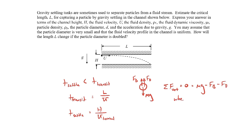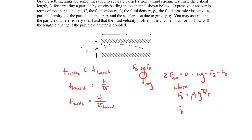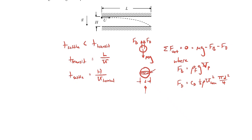The buoyant force is the weight of the displaced fluid — the density of the fluid times gravity times the volume of the particle. The drag force is a drag coefficient times the dynamic pressure based on terminal speed, times the projected area of the particle, which is πd²/4 — the cross-sectional area seen from the front. Since the particle diameter is d and we assume it's a sphere, the volume of the particle is πd³/6.